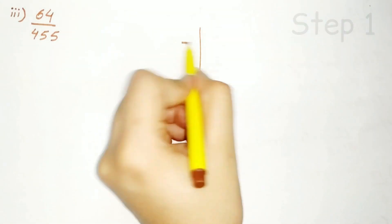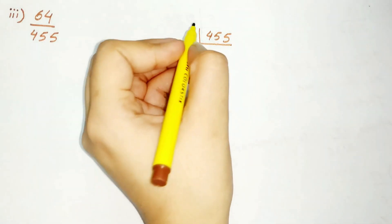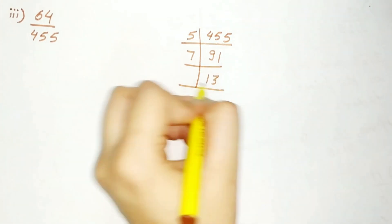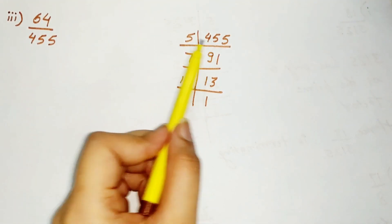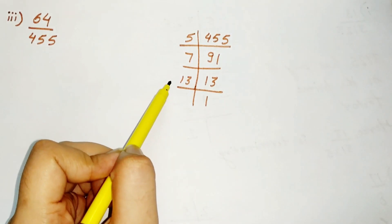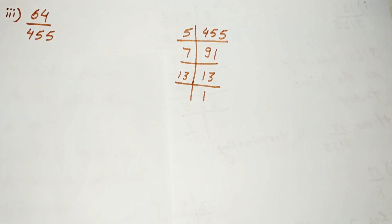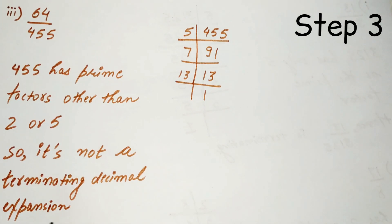The third part is 64 divided by 455. Let's find out the prime factors of 455. Since 455 has prime factors other than 2 and 5 — that is, 7 and 13 — it is not a terminating decimal expansion. Don't forget to write: 455 has prime factors other than 2 or 5, so it's not a terminating decimal expansion.